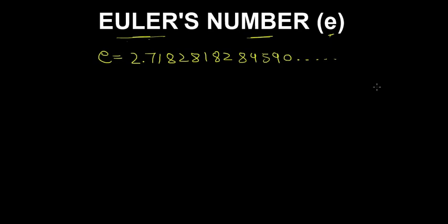After the number pi, which is 3.14 and so on, it is considered the second most important irrational number in mathematics.